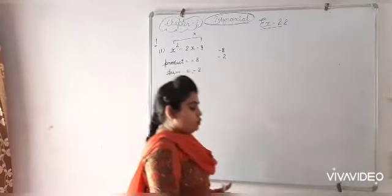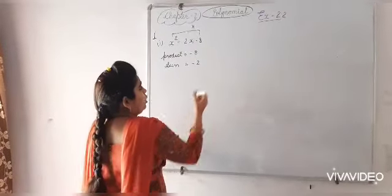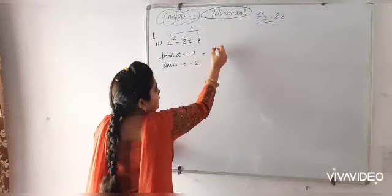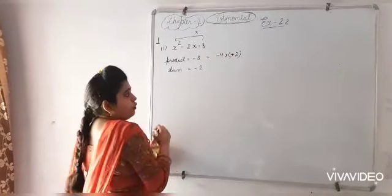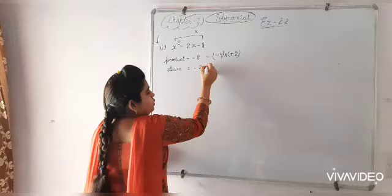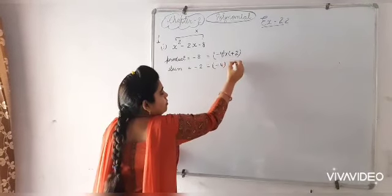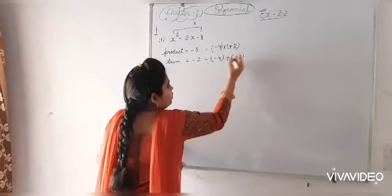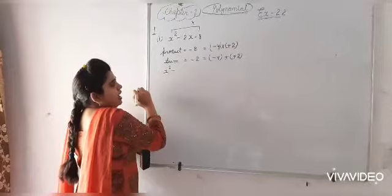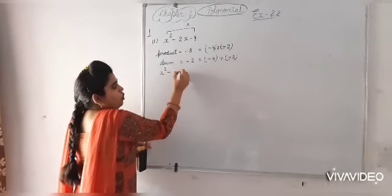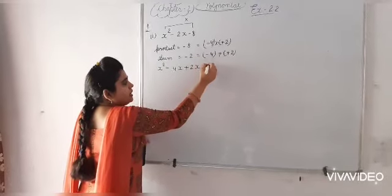Now we have to write this minus 8 or we can write minus 8 as product of minus 4 and plus 2, and minus 2 can be written as sum of minus 4 plus plus 2. This is our middle term splitting method and we can write it like this: x square minus 4x plus 2x minus 8.